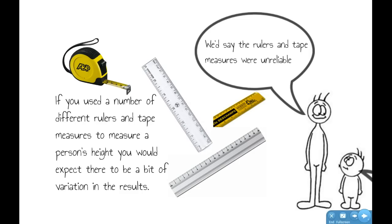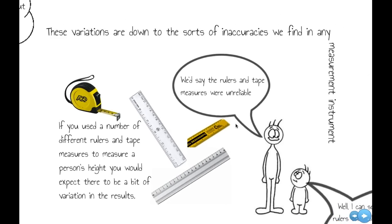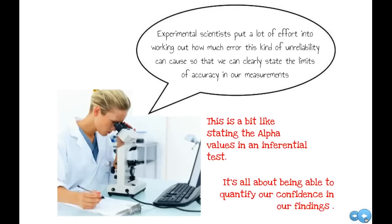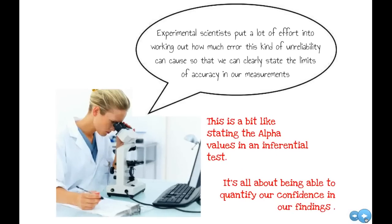If we used a number of different rulers and tape measures to measure the height of these two guys at different heights, you'd expect there to be a bit of variation in the results. This ruler may not be quite the same size as this ruler. So we'd say that these rulers and tape measures were unreliable, and these sorts of variations are down to the inaccuracies we find in any measurement instrument at all.